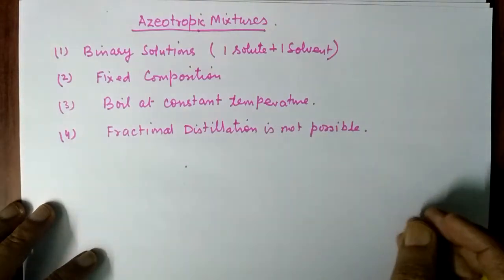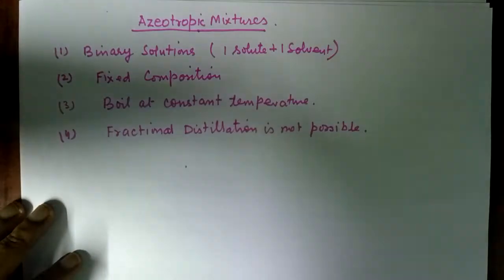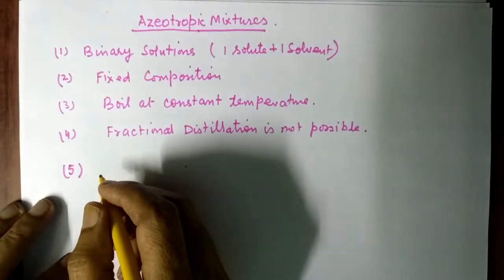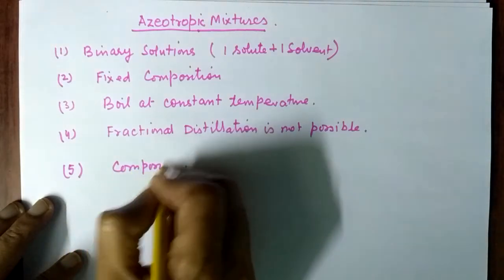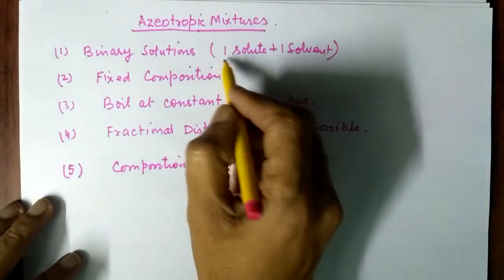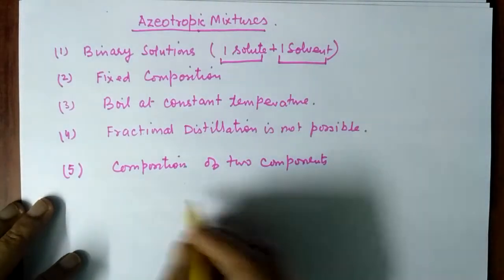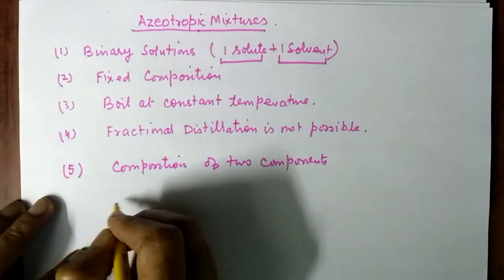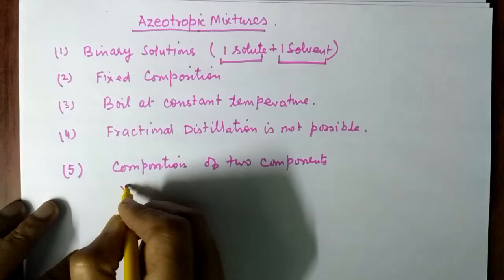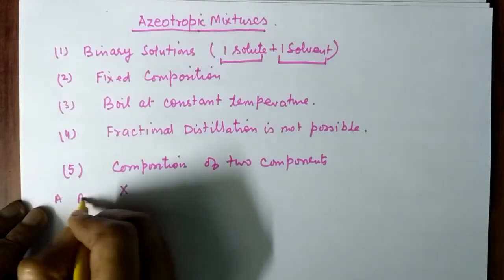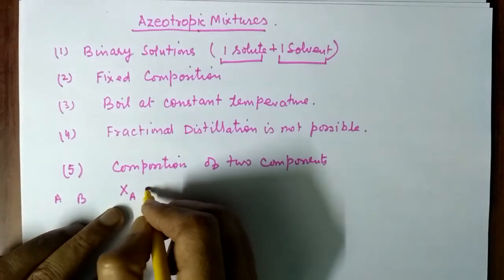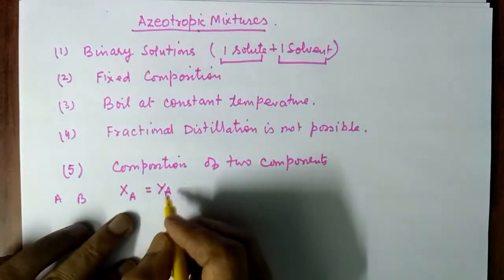We will see what fractional distillation is shortly. The fifth characteristic of azeotropic mixture is that the composition of the two components — one being solute and the other solvent — is the same in the liquid phase as well as in the vapor phase. If there are two components A and B, then x_A, the mole fraction of A in the liquid phase, is equal to y_A, the mole fraction of A in the vapor phase.